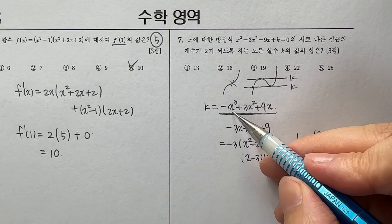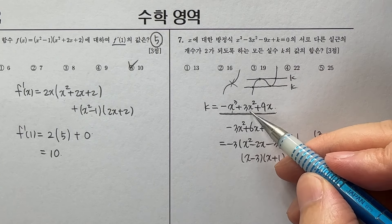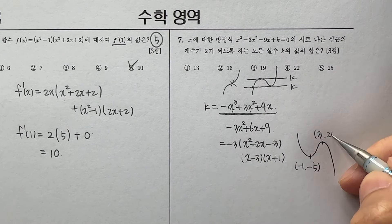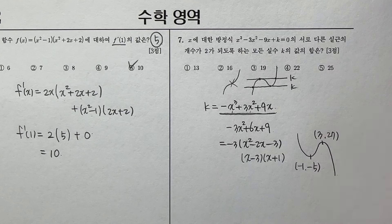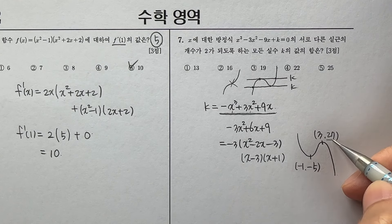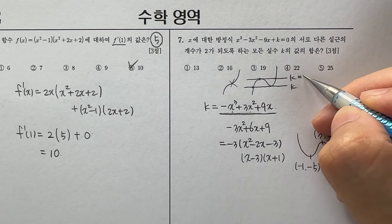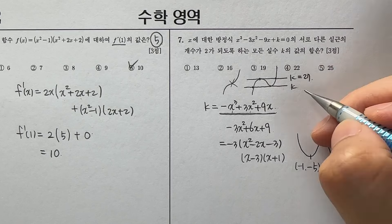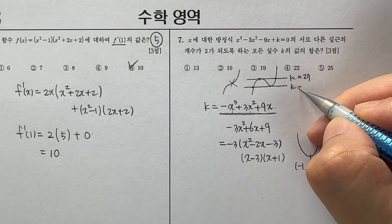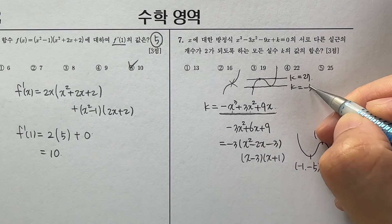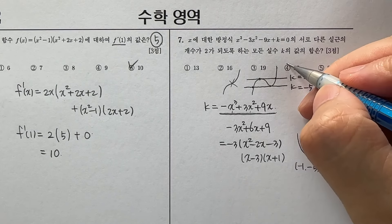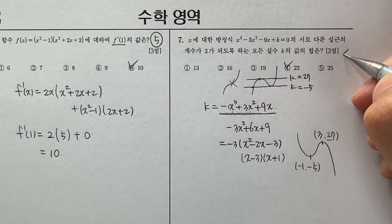원래 식에 -1을 대입하면 +1, +3, -9, -5가 되고, 극대값은 3에 대입하면 -27 + 27 + 27 = 27이 되죠. k값은 27 또는 -5가 되고, 둘을 더하면 22, 4번이 됩니다.